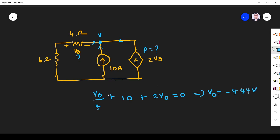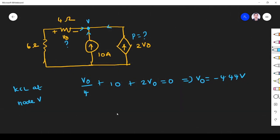So that is equal to zero. If you simplify what you get is V0 is equal to minus 4.44 volt. So I applied KCL. Apply KCL at node V. So V0 we got.